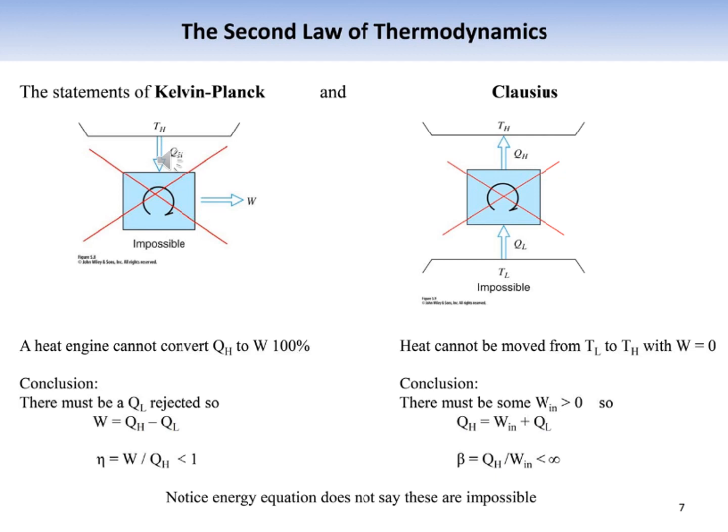Based on the previous discussion, we are now ready to state the second law of thermodynamics. There are two classical statements: the Kelvin-Planck statement and the Clausius statement. The Kelvin-Planck statement: it is impossible to construct a device that operates in a cycle and produces no effect other than the raising of a weight and the exchange of heat with a single reservoir. In effect, it is impossible to construct a heat engine that operates in a cycle, receives heat from a high temperature body, and does an equal amount of work — some heat must be rejected to a low temperature body. This implies that it is impossible to build a heat engine with 100% thermal efficiency.